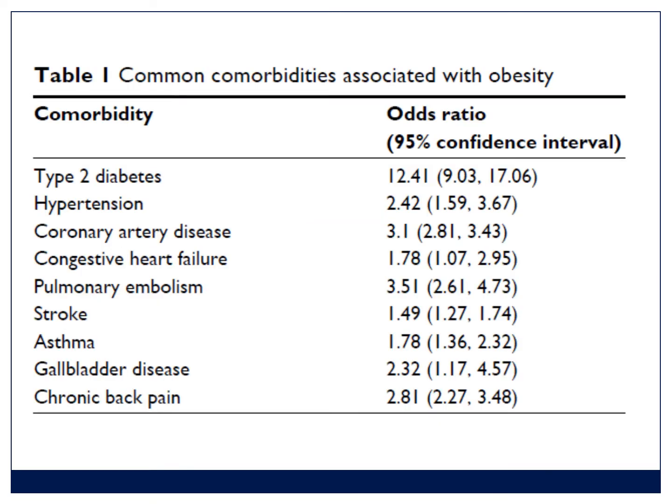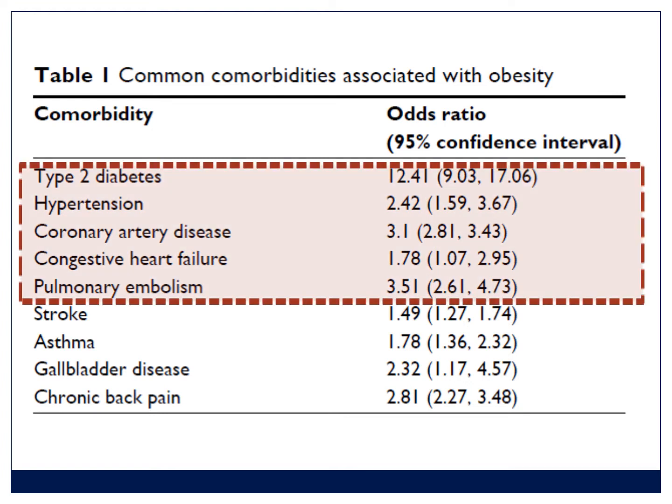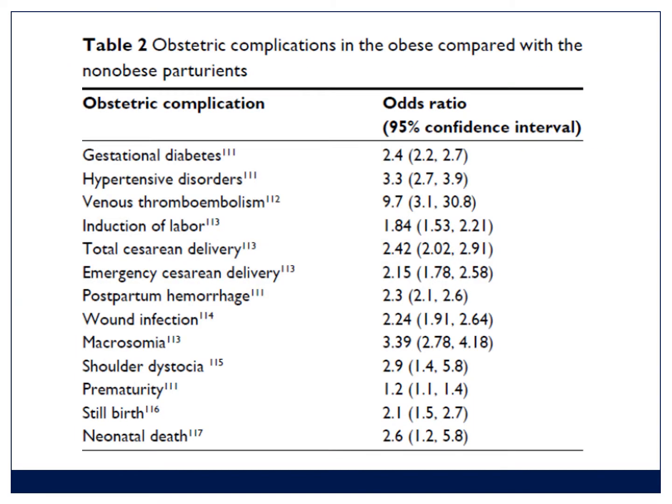One of the first problems is the common comorbidities associated with obesity. In particular, remember that these patients get more diabetes, more hypertension, more heart problems, and they run into pulmonary embolisms — compared with the non-obese patient.